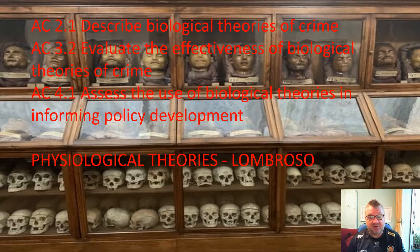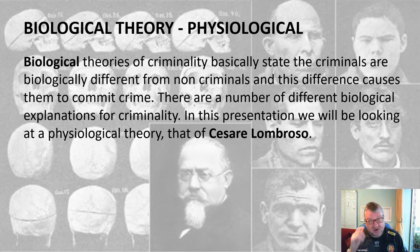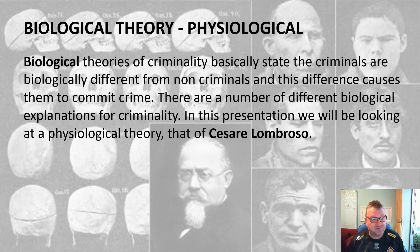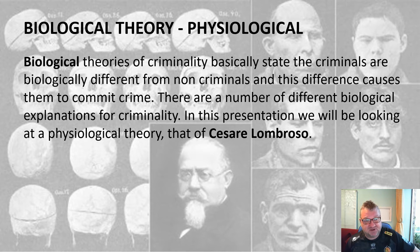The first set of theories we're going to look at are biological theories — AC 2.1 is concerned with biological theories — and we're going to start with a subsection called physiological theories, looking at the work of Cesare Lombroso. Biological theories basically state that criminals are biologically different from non-criminals, and it's this difference that causes them to commit crime.